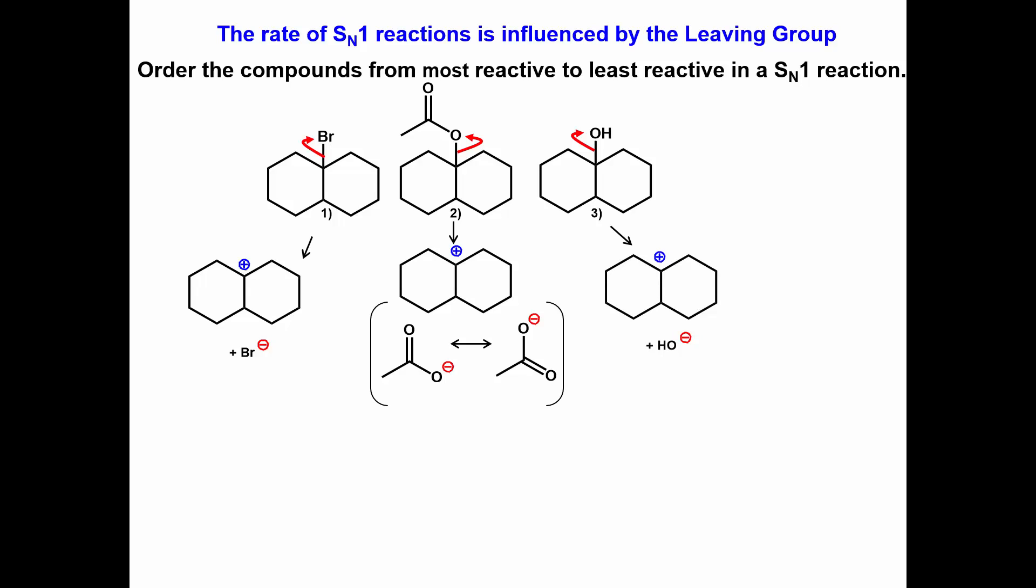Since each reaction is producing the same carbocation, the only difference in the rate of the reaction is the ability of the leaving group to become negatively charged. The bromide ion is the weakest base, followed by the acetate ion, then the hydroxide ion.